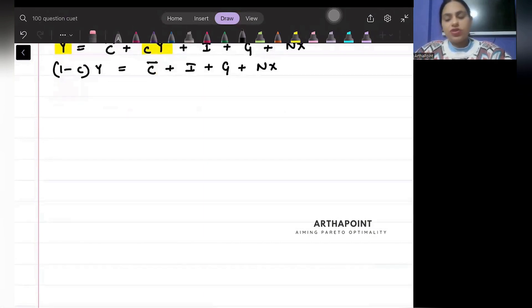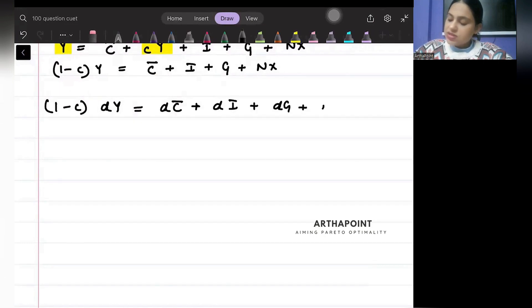I can go ahead and differentiate this on both sides. So I am doing a total differentiation. So (1 - c)dY = dC bar + dI + dG + dNX.